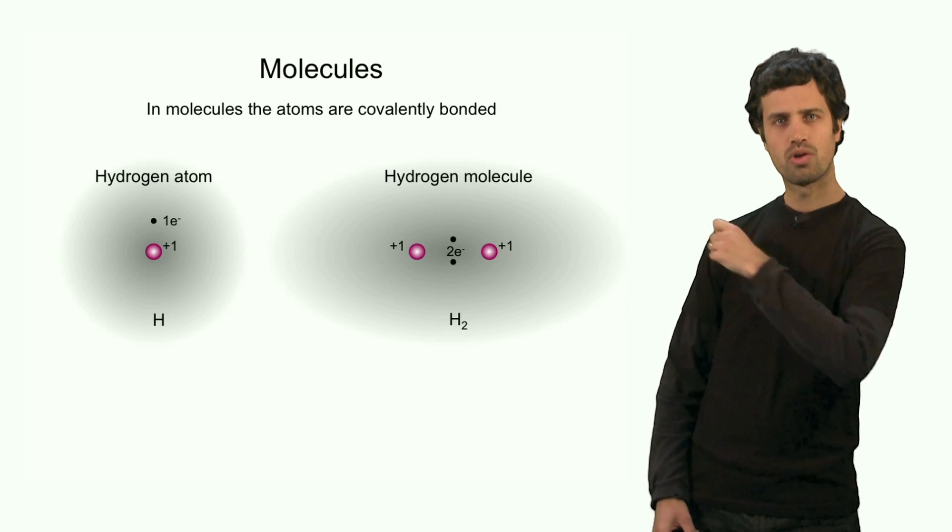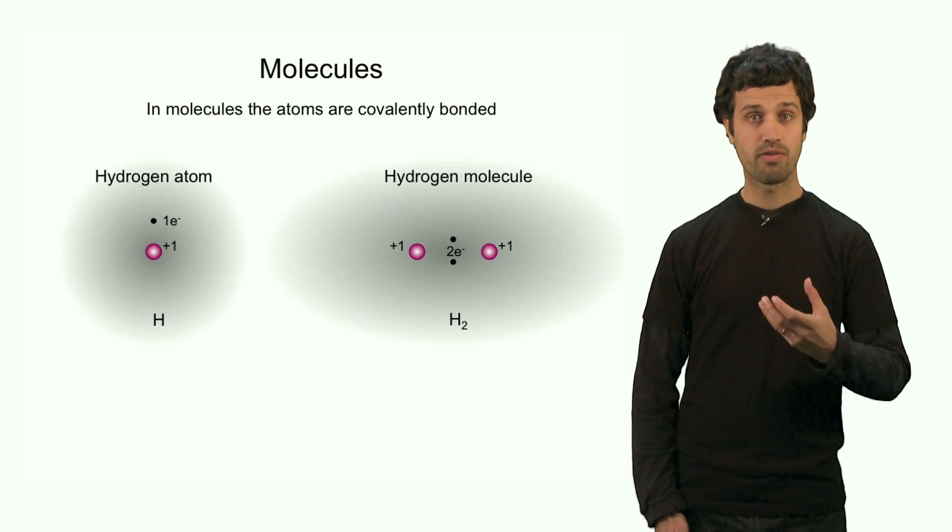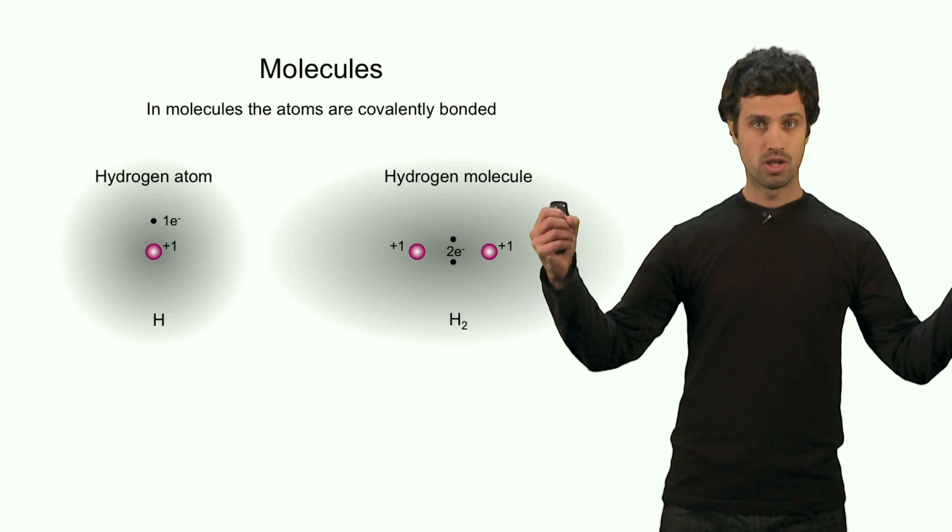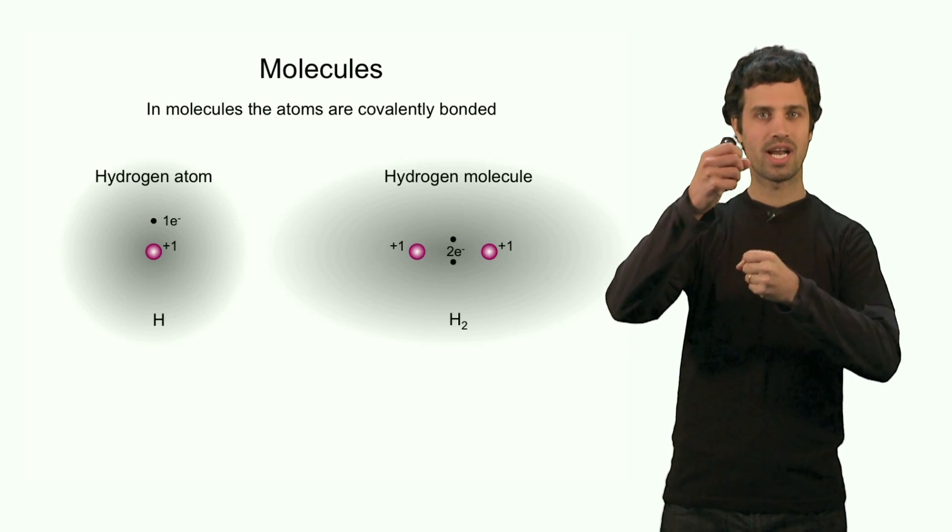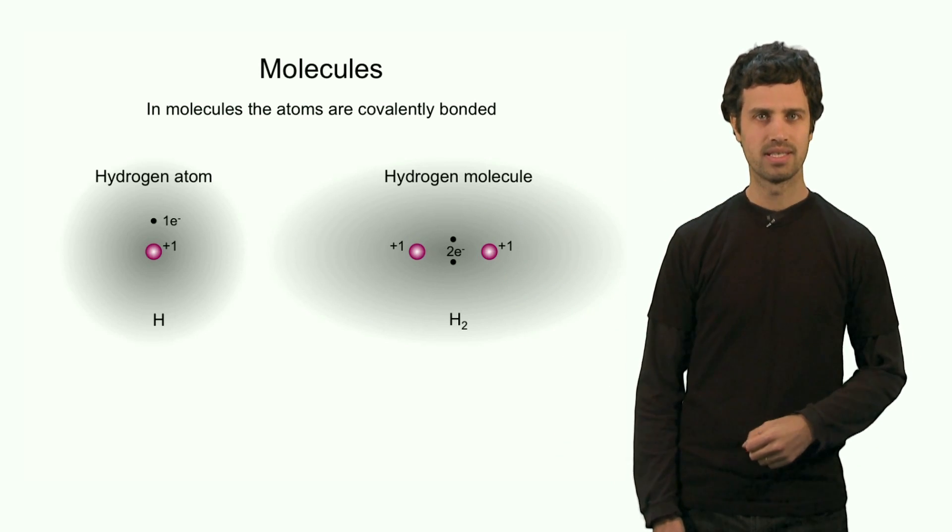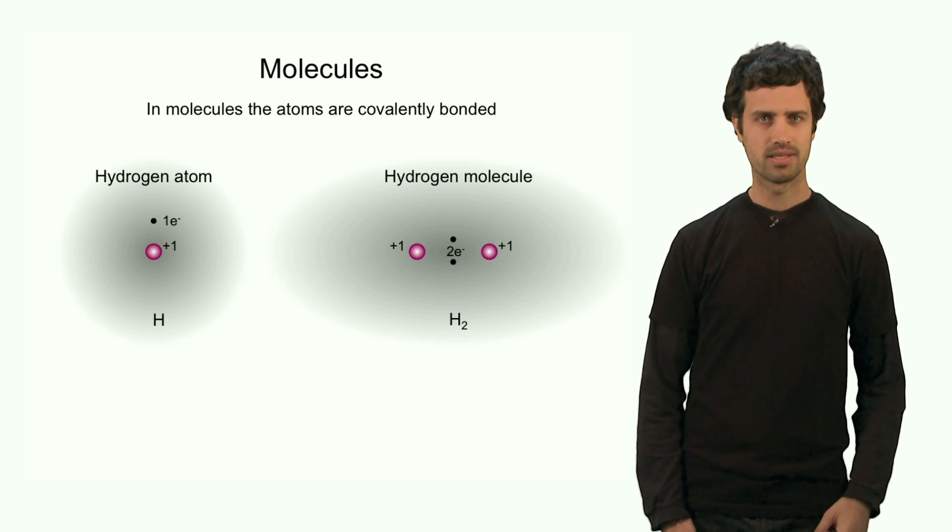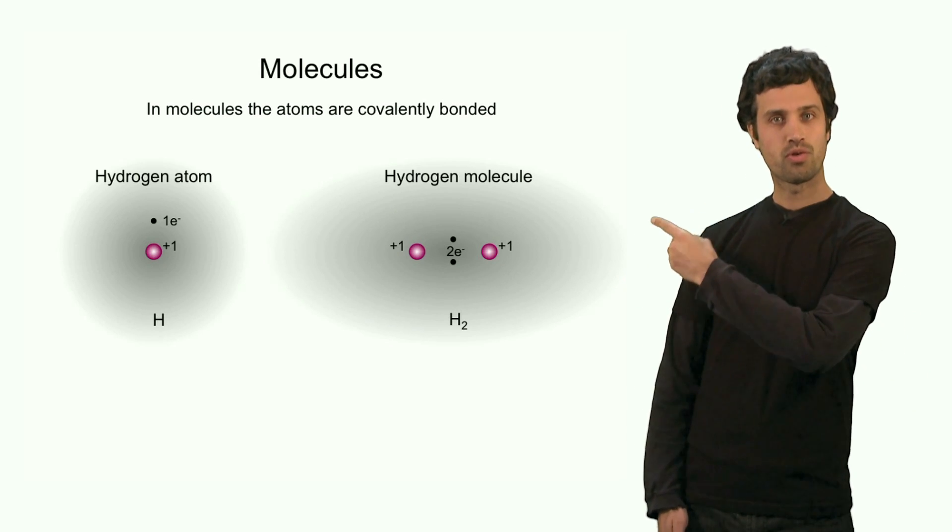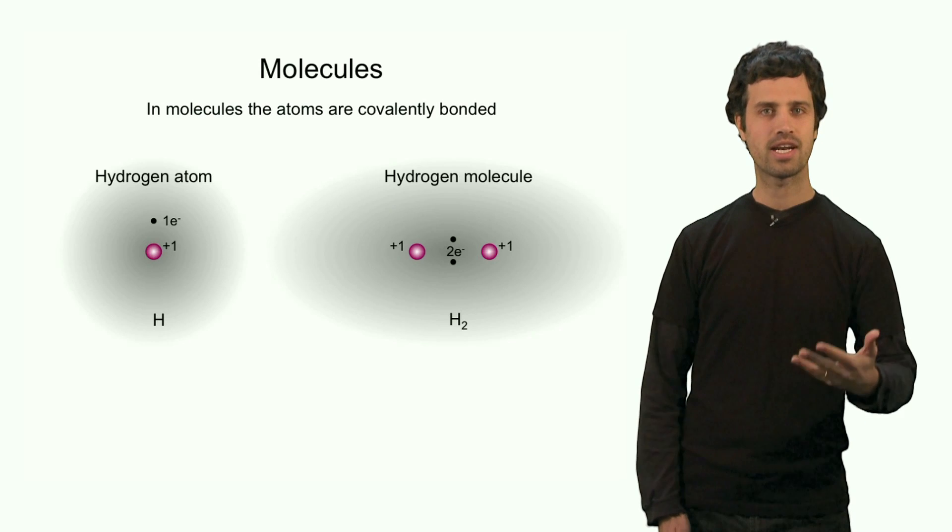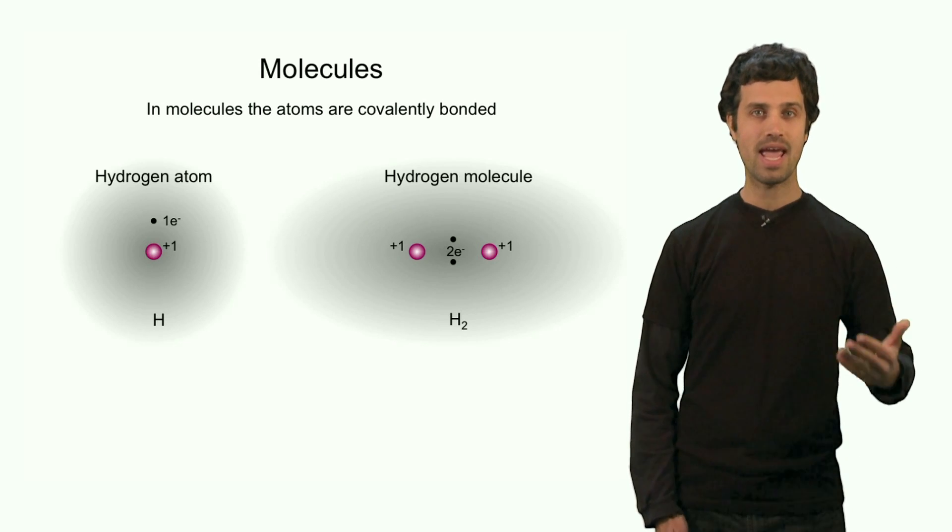These two electrons are now called binding electrons. And they are formed by the two atoms, each delivering one electron to form such a bond. This is the covalent bond. In this case, we have formed a molecule, the hydrogen molecule, indicated here by H2.